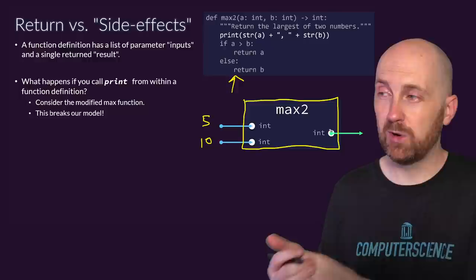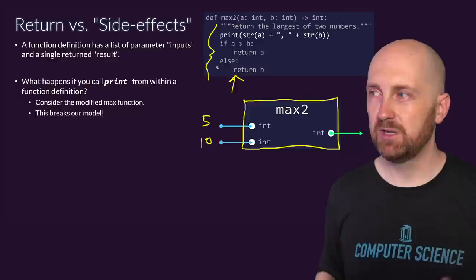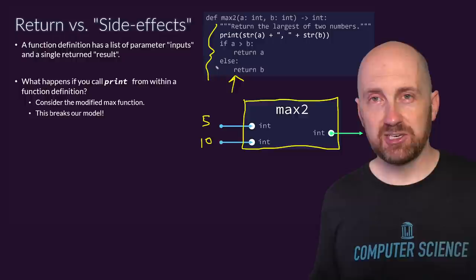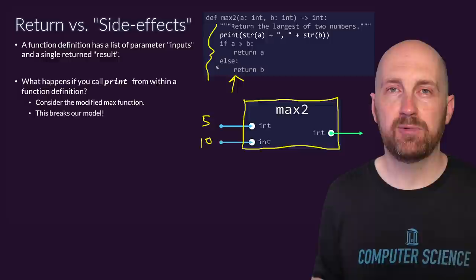Let's look into the box, which is the code shown above. We're modifying a previous definition of max2 — a function that has two int parameters and returns an int value. The modification is we have this print function call above our if statement, and we also see two return statements after that. So we're using one function definition that has both print and return in it, which means these must be different things with different ramifications.